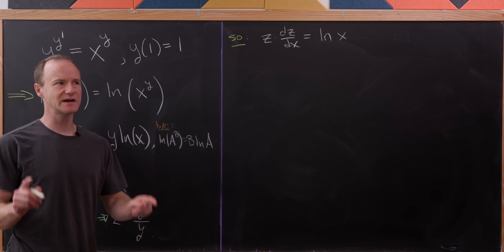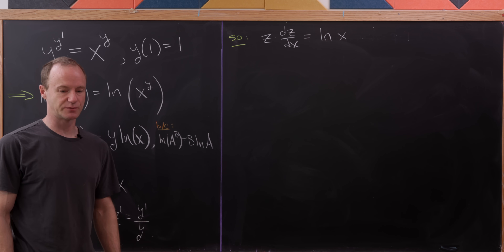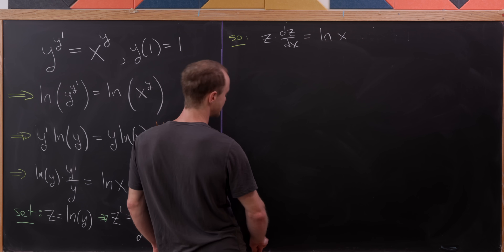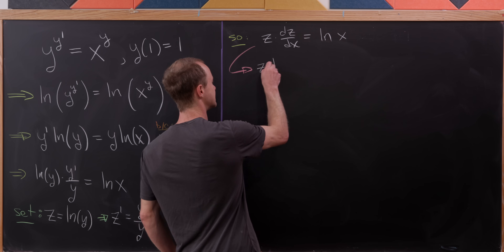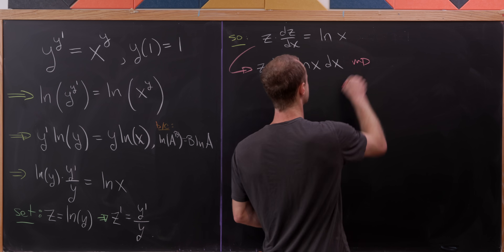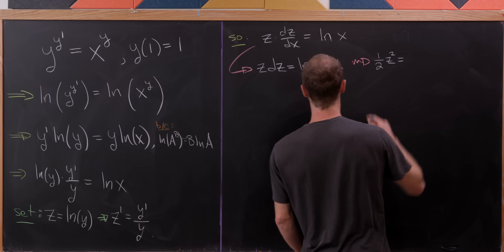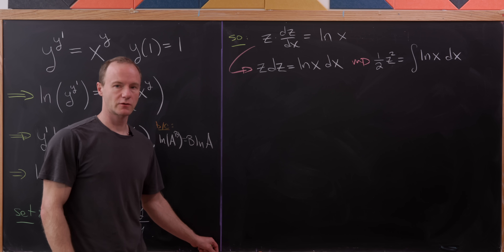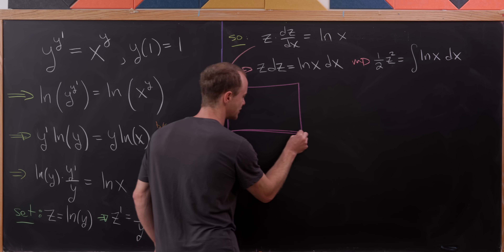Now we're set up to do separation of variables, splitting dz/dx into two parts — which is really shorthand for a substitution, but it works. So we get z dz = ln(x) dx. Integrating both sides gives (1/2)z² equal to the antiderivative of ln(x) dx. To find that antiderivative, since the natural log is an inverse function, we use integration by parts.